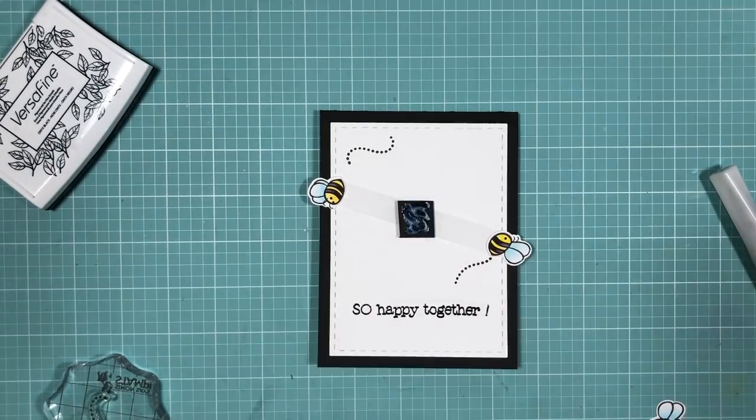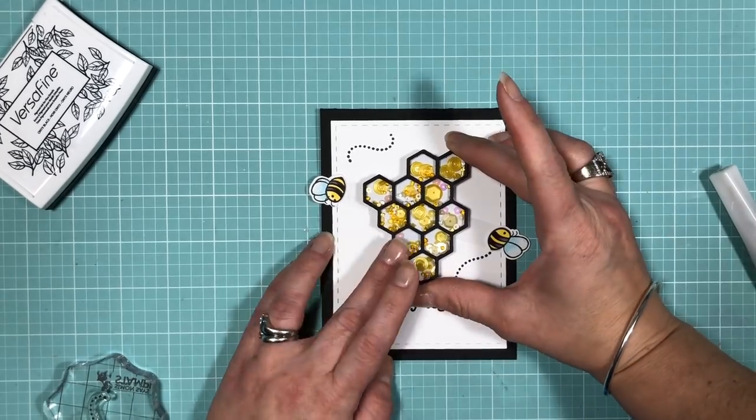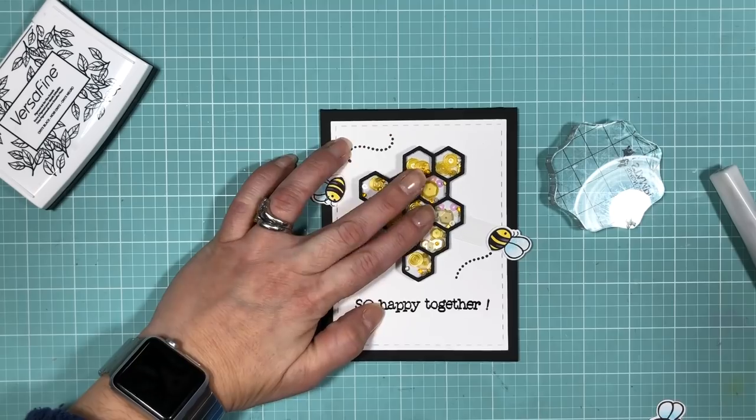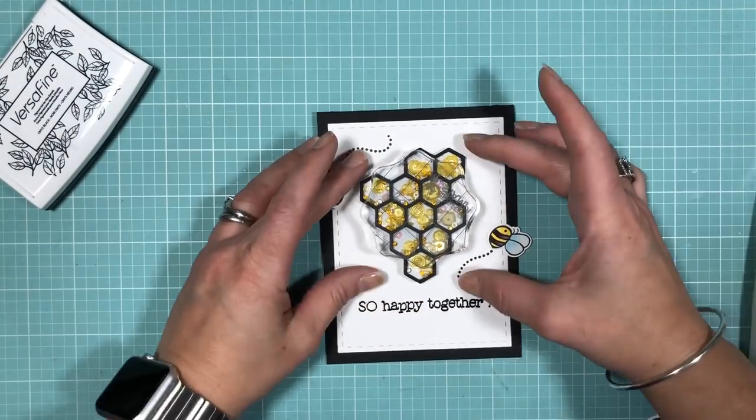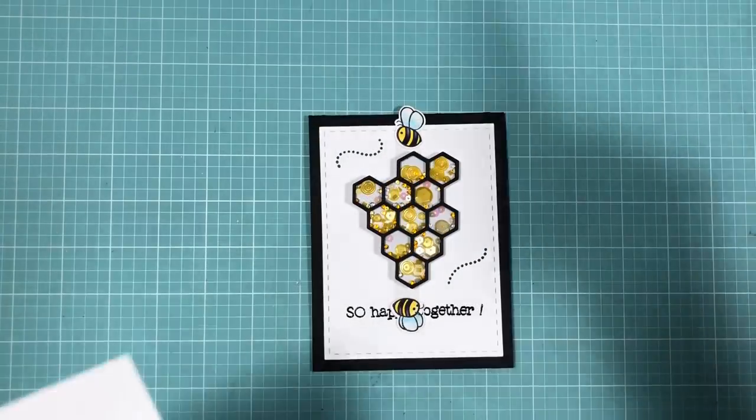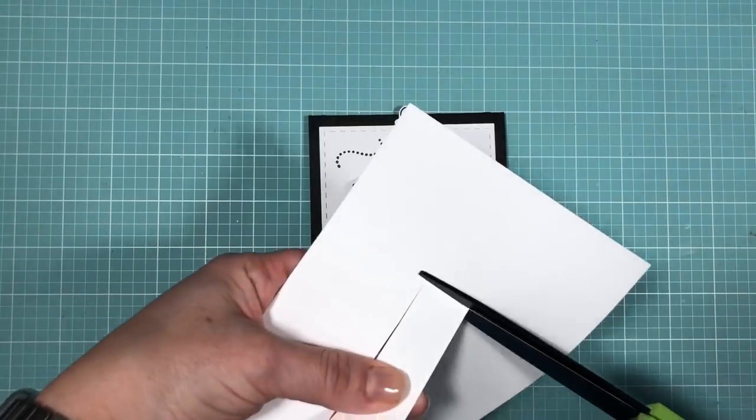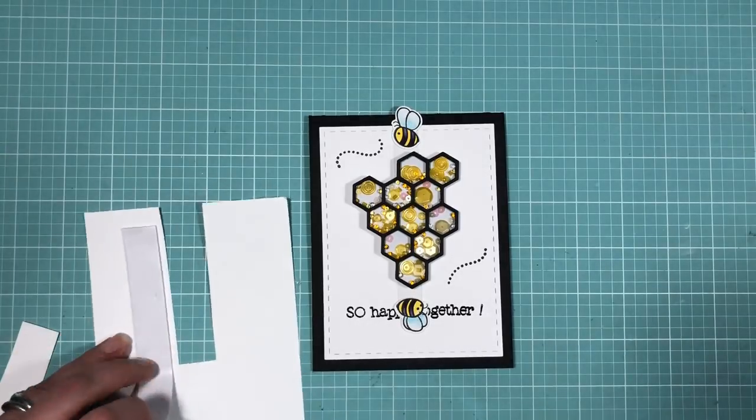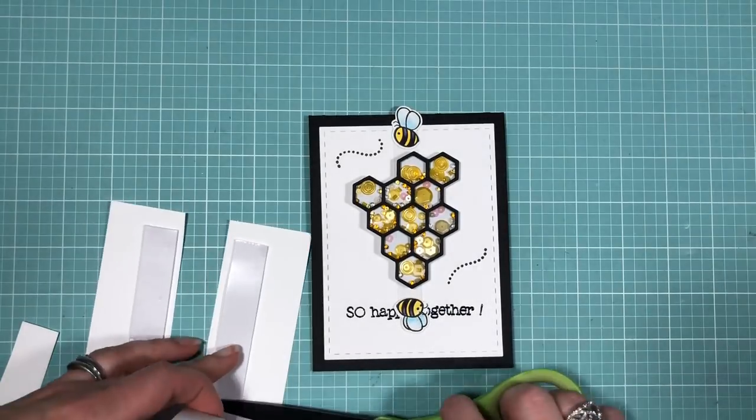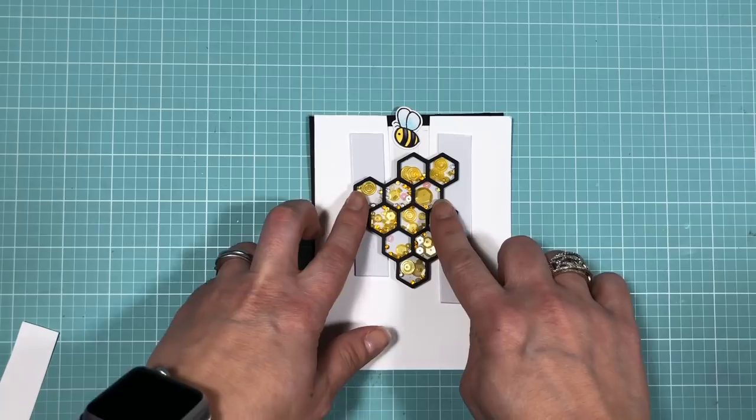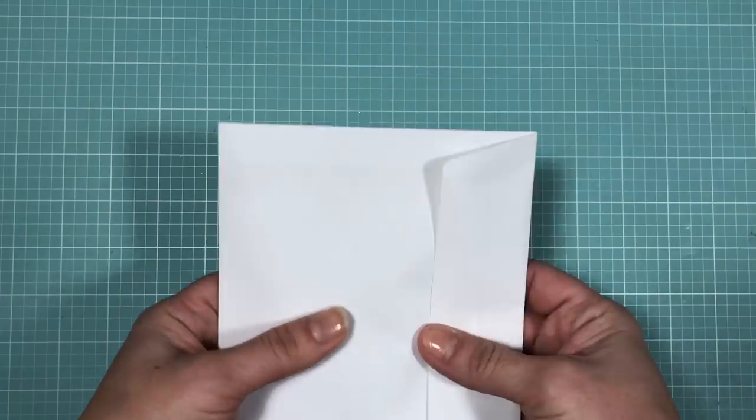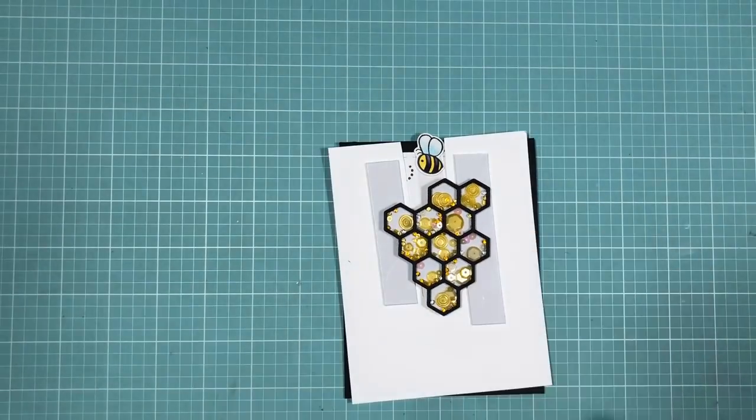So that's pretty much it for this process video. But before you go, I want to show you how to put something like this through the mail so it won't get damaged. So the first thing I did was create a channel to slide in between and underneath the shaker portion. Then all I'm doing is adding some foam tape to the sides of my channel and then sliding it back underneath the shaker portion. Just make sure the thickness of the foam fills that space between the shaker portion and the card base.